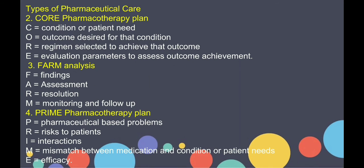The next type is the CORE pharmacotherapy plan. In this: C stands for the condition or the patient need — what is the patient's need; O is the outcome desired for that condition; R is the regimen selected to achieve that outcome; and E is the evaluation parameter to assess the outcome achievement. So in the CORE pharmacotherapy plan, you identify the patient's condition and need, determine the desired outcome, select the regimen to achieve that outcome, and then evaluate the parameters.